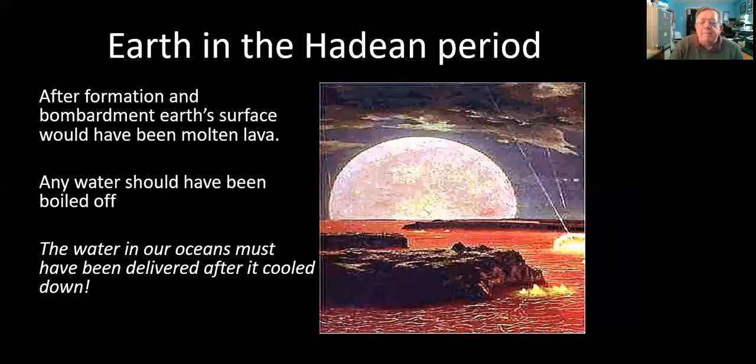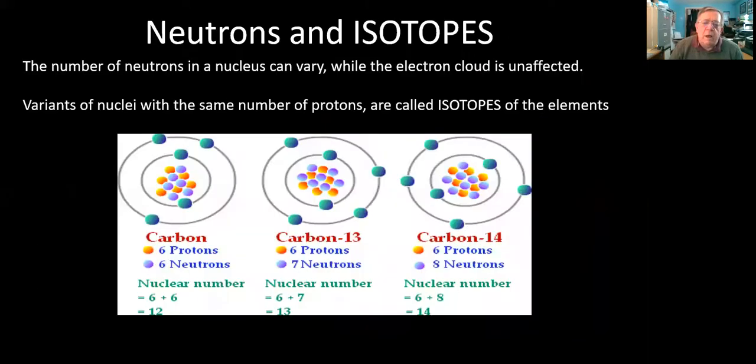Now to do that, we need to understand one more little thing about the nature of isotopes of different elements. In discussing nuclear fusion, we've already talked about the ideas of helium-3 and helium-4, depending on the number of neutrons.